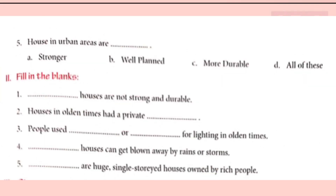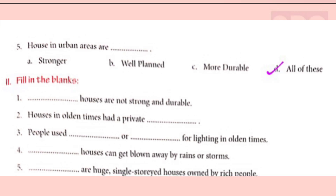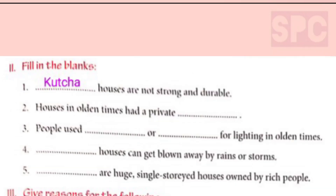Question 5: Houses in urban areas are — (a) stronger, (b) well planned, (c) more durable, (d) all of these. The answer is option D: all of these. Houses in urban areas are stronger, well planned, and very durable. Second question — fill in the blanks. Question 1: Dash houses are not strong and durable. Answer: kaccha houses are not strong and durable. We will write 'kaccha' in the blank.